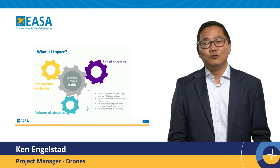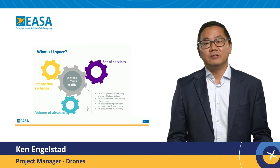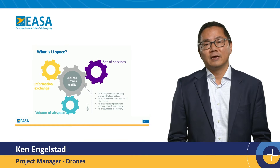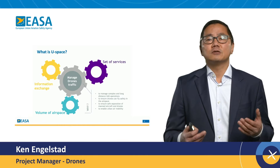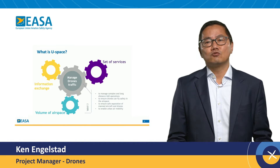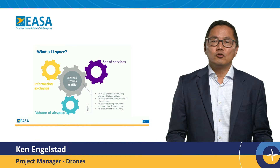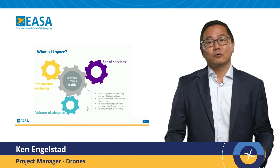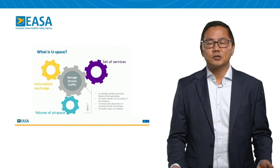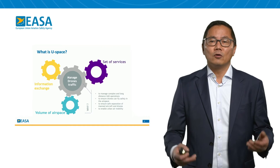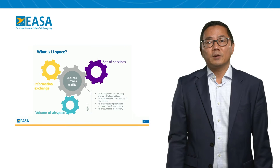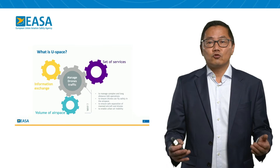U-Space is the European air traffic management for drones. It is a system through which a set of services will be provided to drone operators in a volume of airspace called U-Space airspace, where the necessary information and data will be provided and exchanged. The objective of U-Space is to create